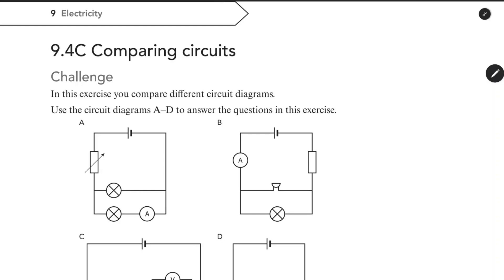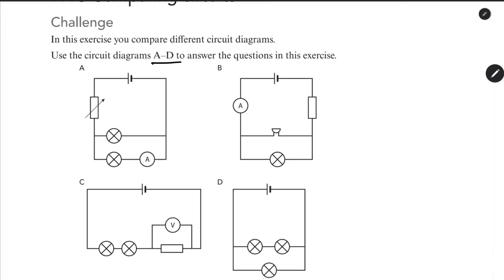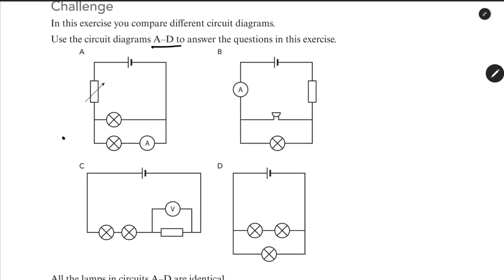9.4C Comparing the Circuits — this is a little bit interesting. In the exercise, you compare different circuit diagrams. Use circuit diagrams A to D to answer the questions. There are 4 diagrams: A is parallel circuit, B is parallel circuit, C is parallel circuit, and D is series circuit.